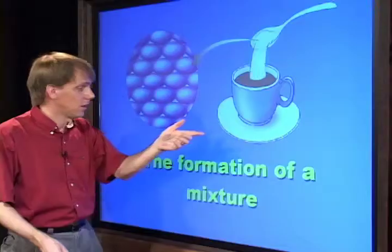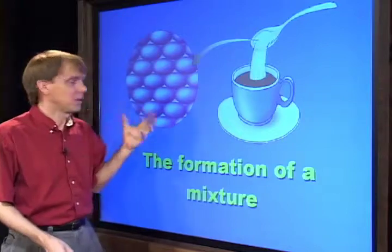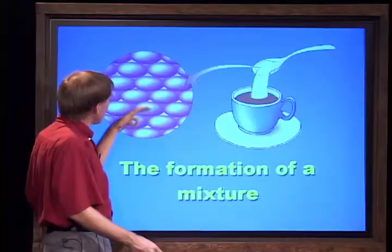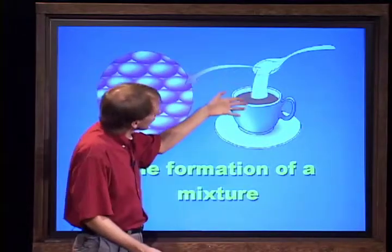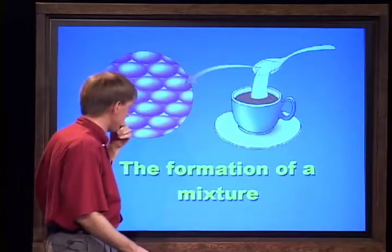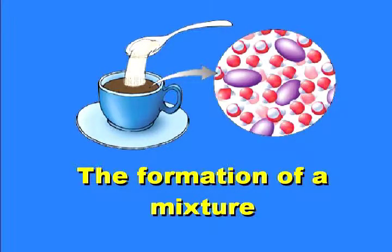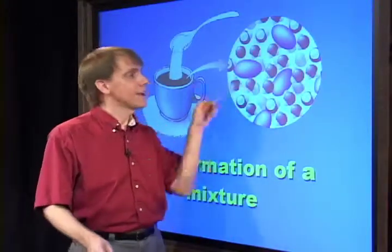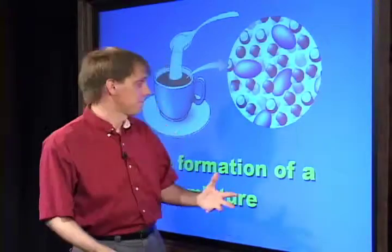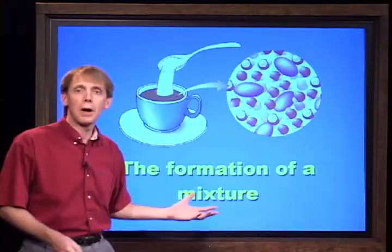Let's look at the formation of sugar water. From the submicroscopic point of view, each one of these ellipsoids represents a sugar molecule being added to the tea. When you do that, you end up with the sugar and the water — that's what you started with. The sugar and water are now mixed together, but they're still the same substances, which is clearly an example of a physical process. Those are the important points about mixtures.